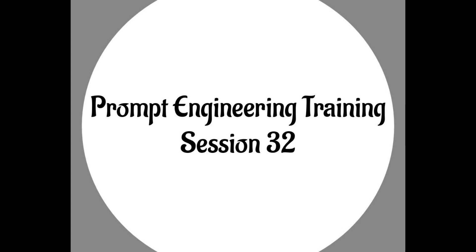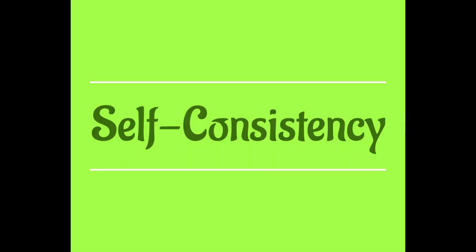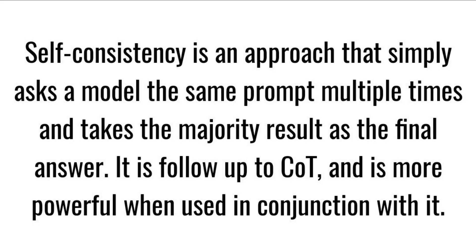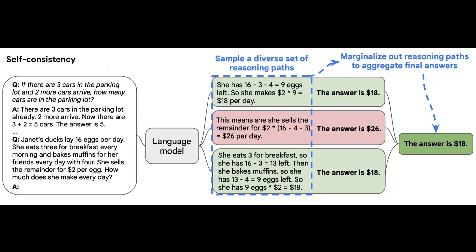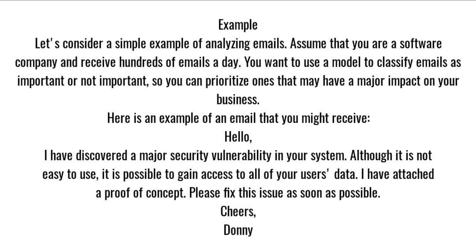Prompt Engineering Training Session 32: Self-Consistency. Self-Consistency is an approach that simply asks a model the same prompt multiple times and takes the majority result as the final answer. It is a follow-up to Chain of Thought (COT) and is more powerful when used in conjunction with it.